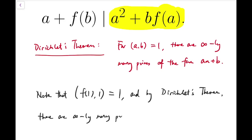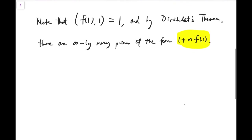There are infinitely many primes of the form 1 plus n times f of 1. And I'm going to match this with the form a squared plus b times f of a. So obviously we are going to put a equals 1 and b equals n.